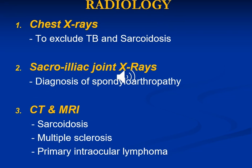Radiological investigations can help identify the cause of uveitis. Number one is chest X-ray, to exclude tuberculosis and sarcoidosis. Number two, sacroiliac X-ray, to exclude sacroiliitis associated with spondyloarthropathies. Number three, CT chest for sarcoidosis. And MRI brain to exclude multiple sclerosis and primary intraocular lymphoma.